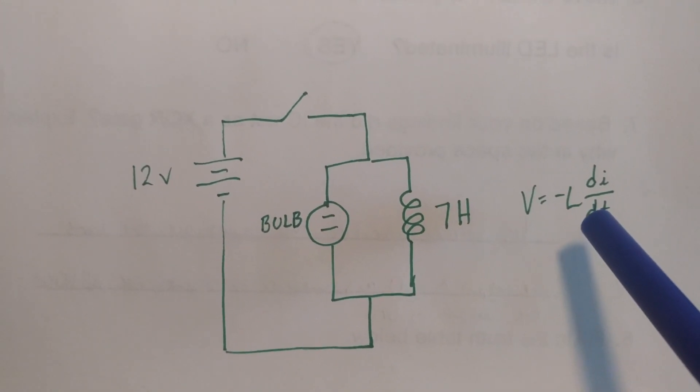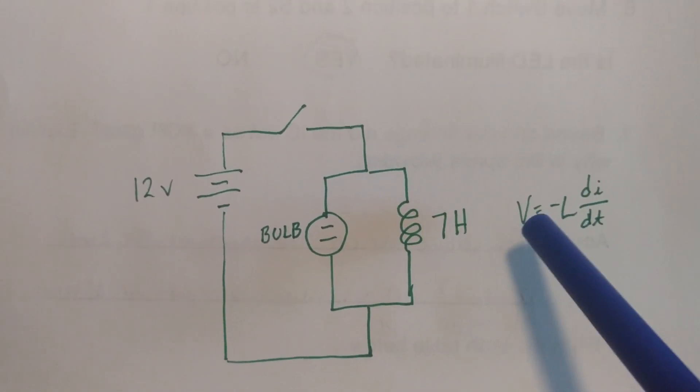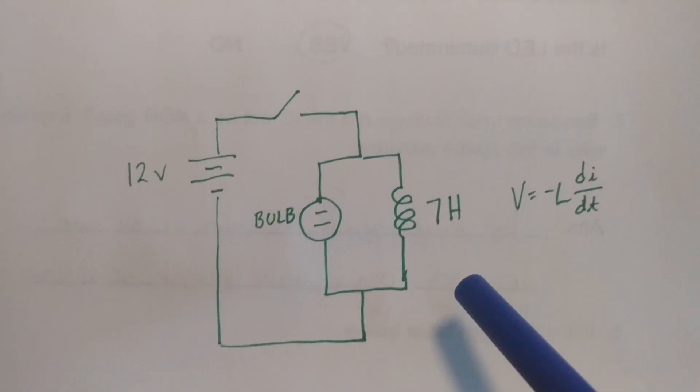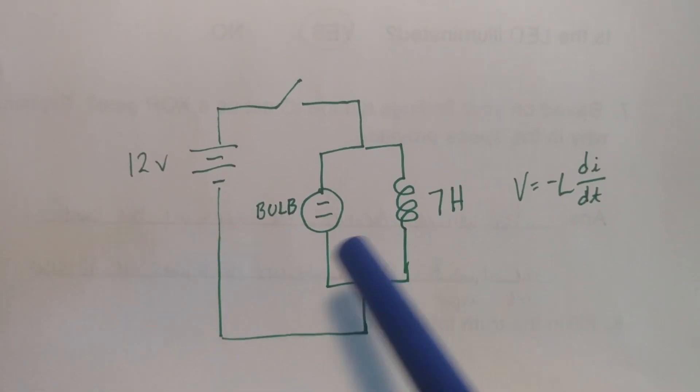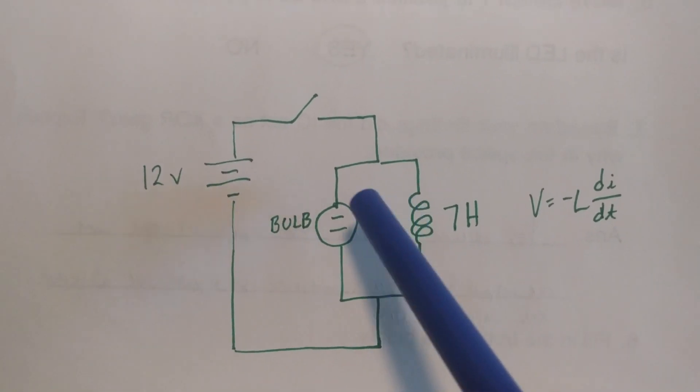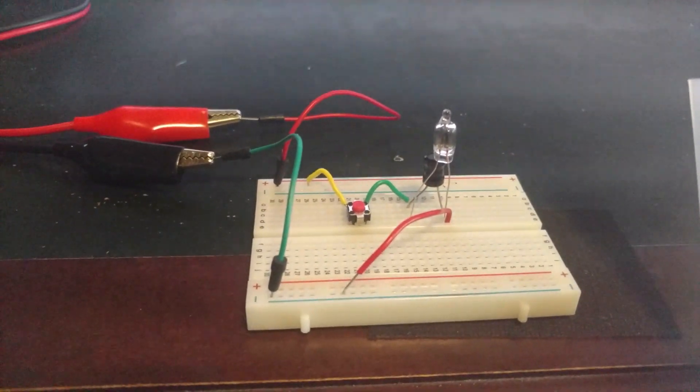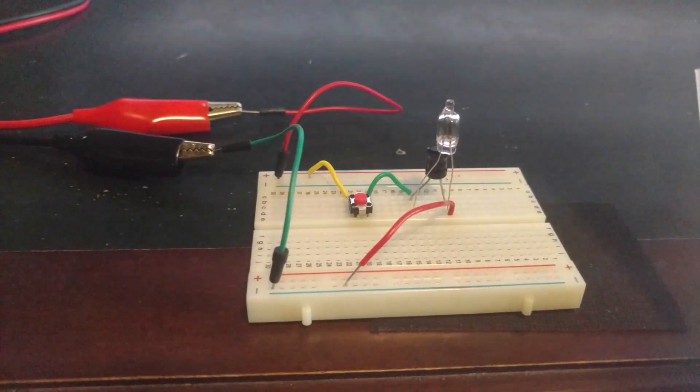Well this dt is extremely small because this change is happening really quick so this boosts the voltage to a very large number. In fact in some cases it could be ten times the number of the original voltage source. So that's how it gets boosted high enough to light this bulb. We refer to that boost as a kickback voltage.